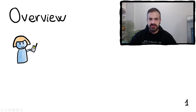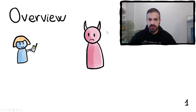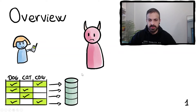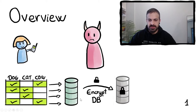Our work considers the following problem. Consider a user Alice and an honest but curious service provider. Alice has a data set with four documents. Each document has certain keywords that are represented by this table. For example document 1 has the keywords cow and dog. This data set is too big for Alice to hold in her phone but it's also privacy sensitive, so she wants to outsource it to the server. First she encrypts the data set using symmetric encryption and sends it to the server.